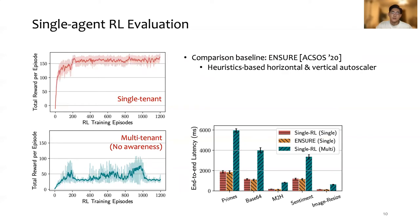To evaluate the online performance, we compare the single-agent RL with the baseline approach Ensure, which is a heuristic-based horizontal and vertical scaler. We find that single-agent RL in single-tenant environment achieved similar end-to-end latency compared to Ensure, while Ensure over-provisions containers and resources in some cases.